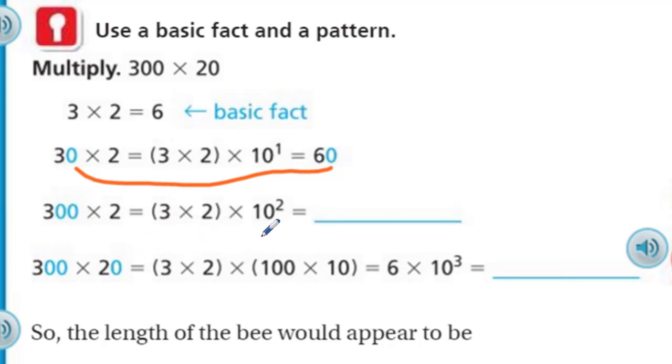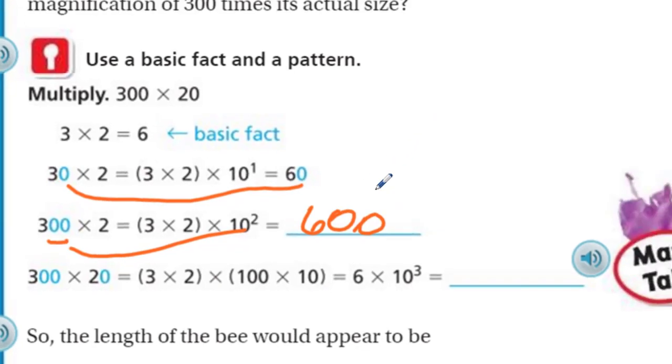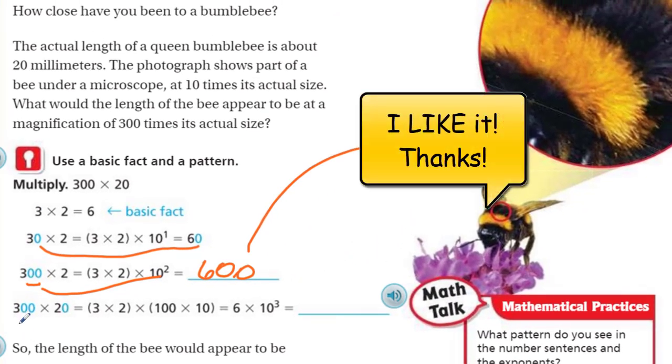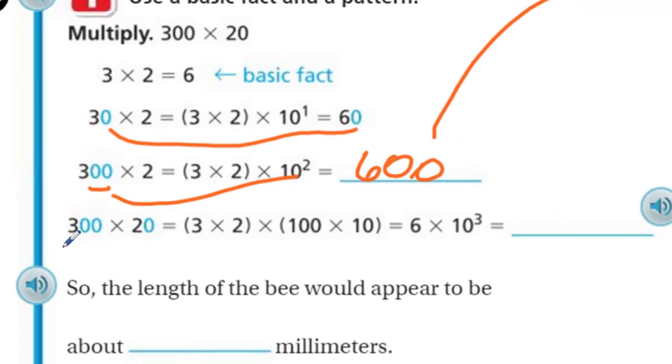We're doing 300 times 20 because we know the actual size is 20 millimeters, and it's going to be magnified 300 times. 3 times 2 is the basic fact. 3 times 2 is 6. Then we have 30 times 2, so 30 times 2 equals 3 times 2 times 10 to the first power, which is just times 10, which equals 60. Look how that worked out. Now we have 300 times 2. Again, our basic fact 3 times 2 times 10 to the second power because that's our 100 right there, matching up with this guy. So we end up with our 6 here, and then two zeros.